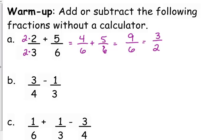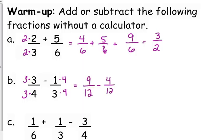Sometimes there is some simplifying that needs to be done, so keep that in the back of your mind. So three-fourths minus one-third — we need a common denominator. The least common multiple is twelve, so we need to multiply the first one by three over three and the second one by four over four: nine-twelfths minus four-twelfths gives us five over twelve.